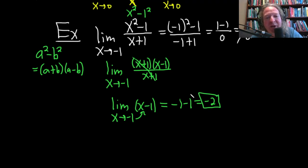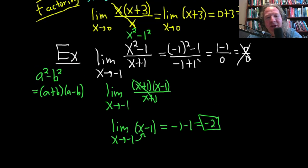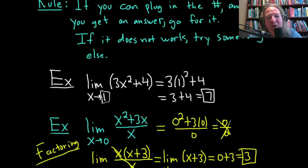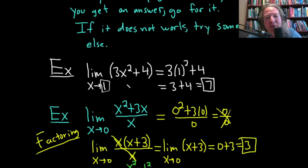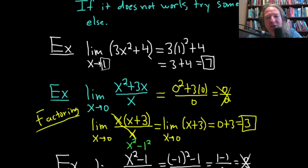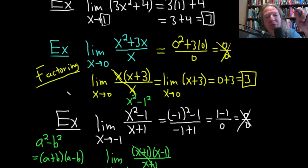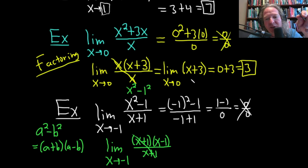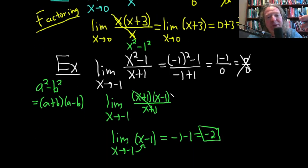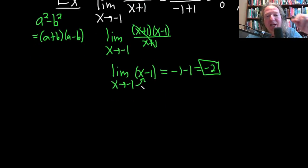So we've done three examples. In the first, we used the golden rule: plug in the number, get an answer, done — just make sure to drop the limit sign. In the next two we used factoring: first by pulling out a greatest common factor (the x), then using the difference of squares formula. Let's do another example where things get more interesting.